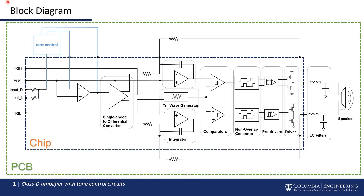Now let's look at the block diagram to understand the topology of our Class-D audio amplifier more clearly. The larger green box represents the PCB we built to test our chip, and the inner dark blue box represents the chip we designed. The input audio signal enters the right and left channels, merges together, and re-enters the tone control circuit on the PCB board. The signal then enters the chip connected to an op-amp, which compensates for losses in the tone control circuit. The signal then enters a single-ended to differential converter, producing two differential audio signals that are identical but out of phase.